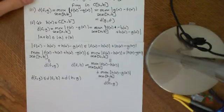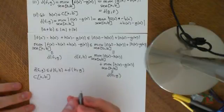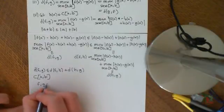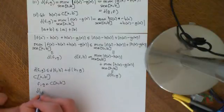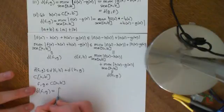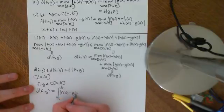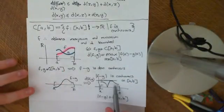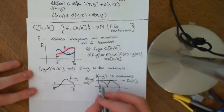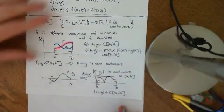Welcome to the second video on function spaces. In this video we're going to take the same set — the set C[a,b] again — but we're going to define a different metric on it. We take F and G as elements of C[a,b], so they're both continuous functions on the interval [a,b], and we define the distance between F and G by the integral over [a,b] of the modulus of F(x) minus G(x), dx. Looking back at our picture, we have F and G, and we drew a picture of |F(x) − G(x)|. Basically the integral over [a,b] will be the area under this curve, which is well defined and is a positive real number.